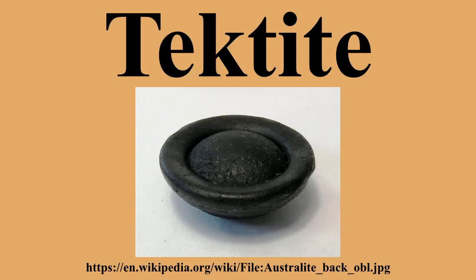Since 1963, it has been known that the majority of known tektites occur only within four geographically extensive strewn fields: the Australasian, Central European, Ivory Coast, and North American strewn fields. The tektites within each strewn field are related to each other with respect to petrological, physical, and chemical properties as well as their age. Three of the four strewn fields have been clearly linked with impact craters using those same criteria. Recognized types of tektites, grouped by strewn field, their associated craters, and ages include: Australasian strewn field and Central European strewn field.